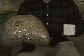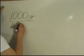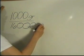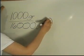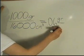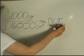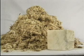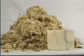Do you think the density of the feathers will be greater or less than the density of the piece of marble? Let's do the math. We know the feathers weigh 1,000 grams and their volume is 16,000 cubic centimeters. By dividing the mass by the volume, we get a density of 0.06 grams per cubic centimeter. As you can see, the feathers have a lower density than the marble. In other words, the marble has more mass per unit of volume.